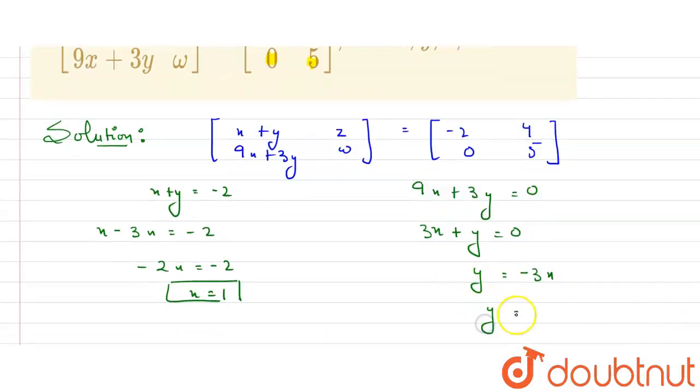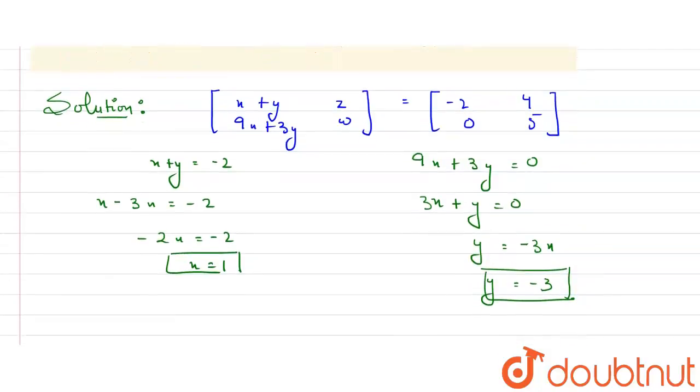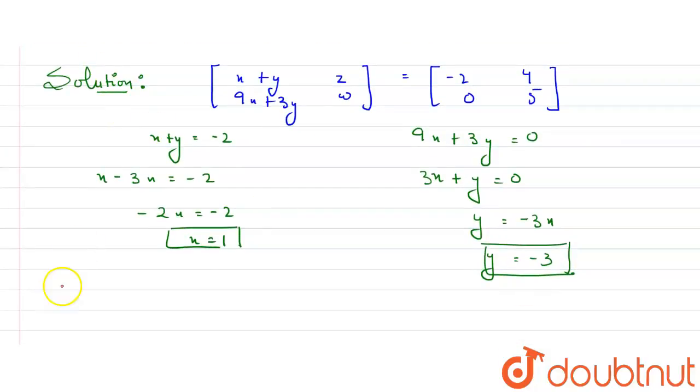So value of y will be equals to minus 3. We have got the value of x and y. Now we need to find the value of z and w. So z will be equals to—the corresponding value is 4 in the other matrix, and w will be equals to 5.